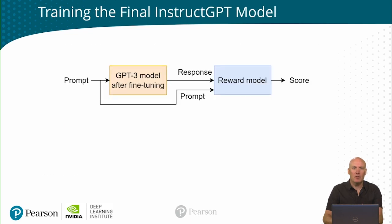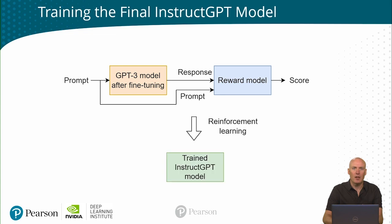Now we have a way of automatically scoring the GPT-3 output using this trained reward model. The next step in reinforcement learning with human feedback is to provide a prompt to GPT-3, which will generate an output. We also provide this prompt and generated output to the reward model, and it will generate a score. Now we use reinforcement learning to improve GPT-3. If we freeze the reward model and the prompt, we simply do back-propagation to maximize the score, which leads to a better fine-tuned GPT-3 model aligned with the human's intentions.